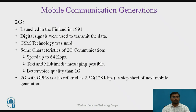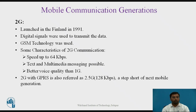The second generation was launched in Finland in 1991. In 2G, digital signals were used to transmit the data, and GSM technology was used — GSM stands for Global System for Mobile Communication. In the second generation, the GSM protocol was used for the first time. Some characteristics of 2G: speed achieved up to 64 kbps (compared to 2.4 kbps in 1G). Text and multimedia messaging became possible, and voice quality improved compared to 1G.